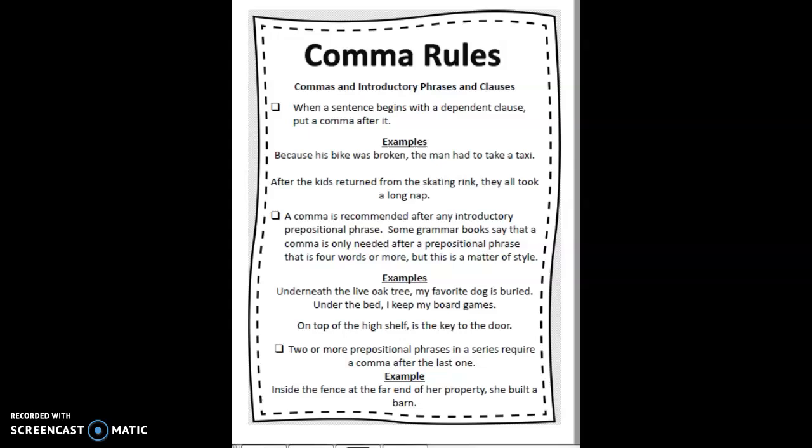"Because his bike was broken, the man had to take a taxi." "Because his bike was broken" is the dependent clause in this sentence, and the subordinate conjunction "because" is what makes it a dependent clause. So after that dependent clause, you have to put a comma — because the dependent clause is at the beginning of the sentence.